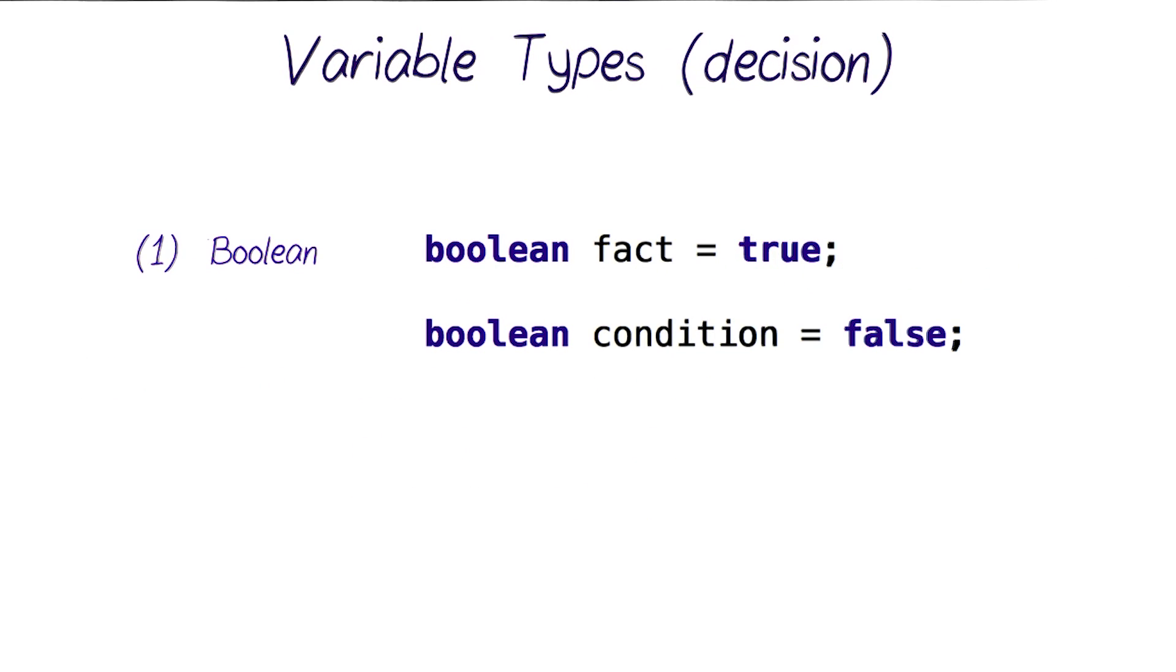Sometimes instead of wanting to store a number in a variable or text, we would want to store the result of a decision that the computer made. And this is when we use the Boolean variable. It can only have two values, either true or false. Pretty much like the answer of a yes or no question, or like a checkbox whether it's checked or not.